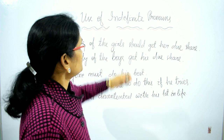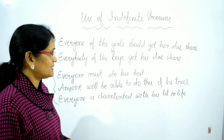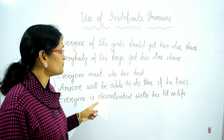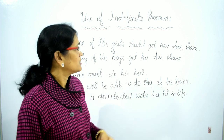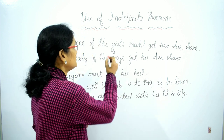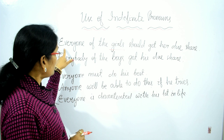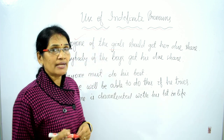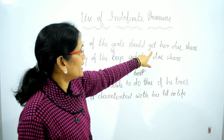Use of indefinite pronouns. I have represented here some sentences of indefinite pronouns in two groups. In the first group: 'Everyone of the girls should get her due share.' Here, 'girls' is a plural noun, but 'Everyone of the girls' refers to a single person of the girls, so we use 'her' because there is an indication of feminine gender and a single person.